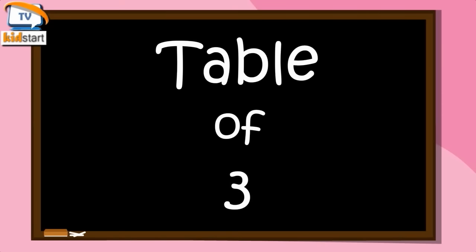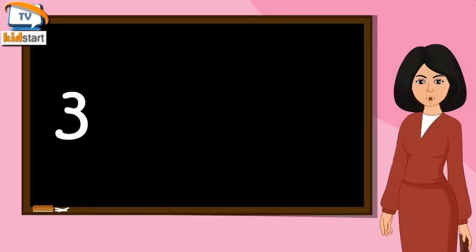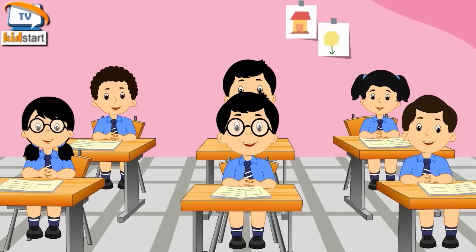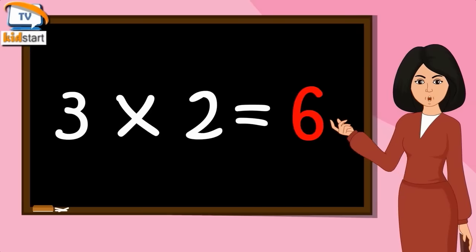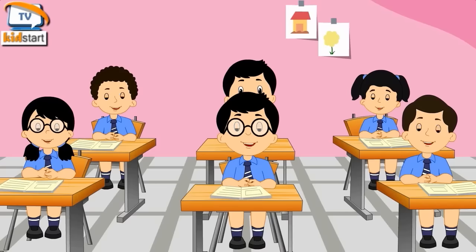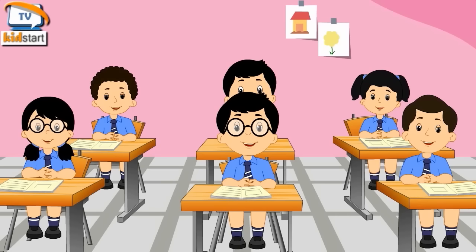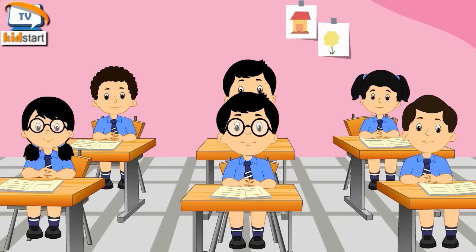Table of Three. Three ones are three. Three twos are six. Three threes are nine. Three fours are twelve.